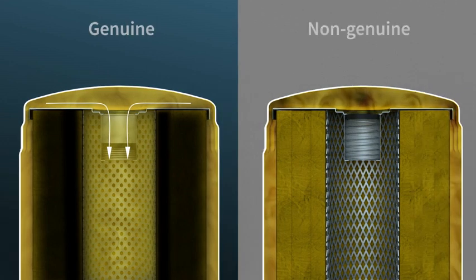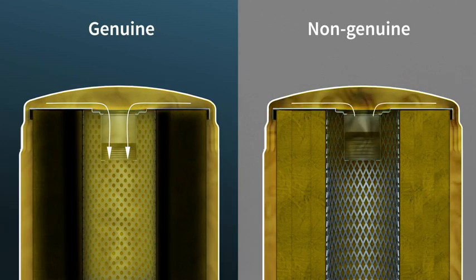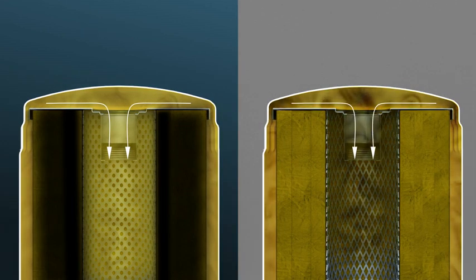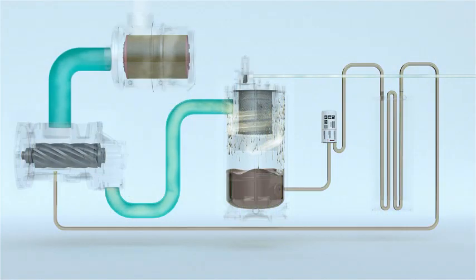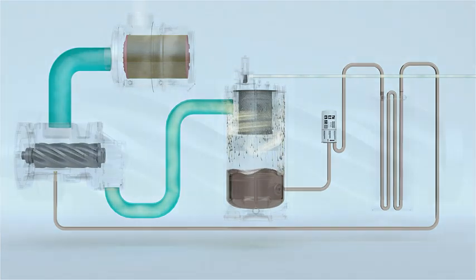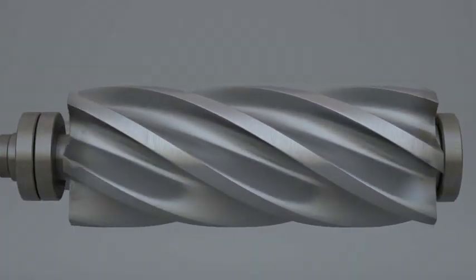If the bypass valve is too weak, it will open too easily, letting unfiltered oil flow freely into the system. This unfiltered oil will end up all over the oil circuit, damaging different components like bearings, coolers, and the compressor element.